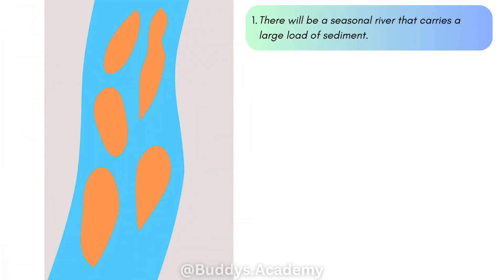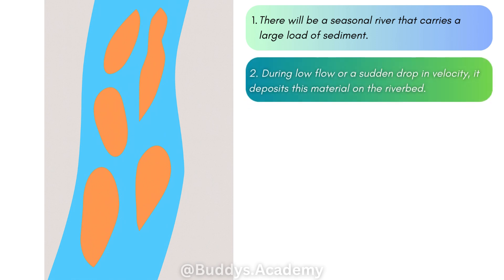So how does a braided stream actually form? Firstly you're going to have a seasonal river that carries a large load of sediment — a lot of sand, a lot of gravel and a lot of silt. Then during any low flow or a sudden drop in velocity, because this river occurs in the lower course which has a very gentle gradient, the river flow is definitely going to decrease. Once you get a sudden drop in velocity, the river slows down and deposits all of the material — sand, gravel and silt — on the riverbed.